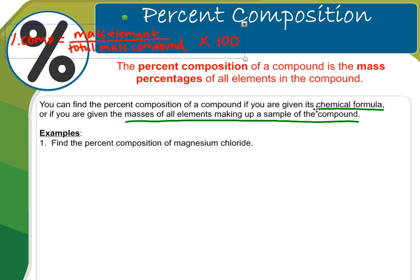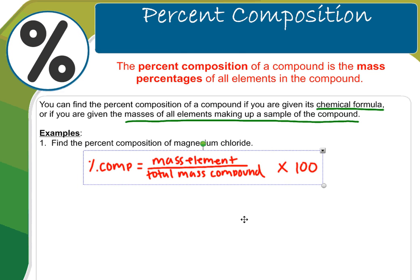Example one says to find the percent composition of magnesium chloride. Well before we can do that, you need the formula for percent composition. So here it is. Copy this down please.